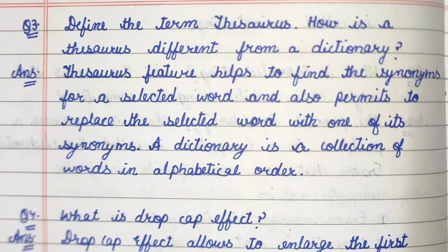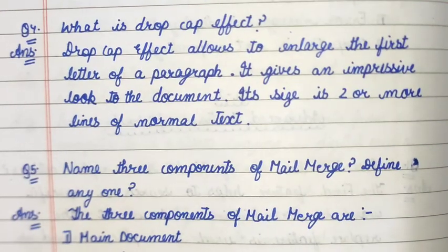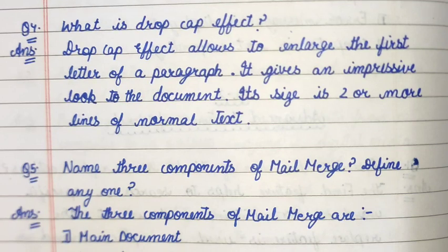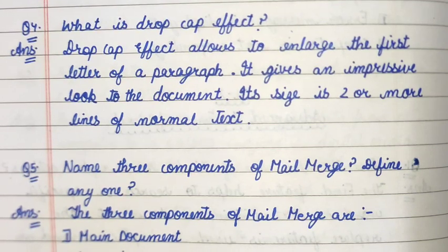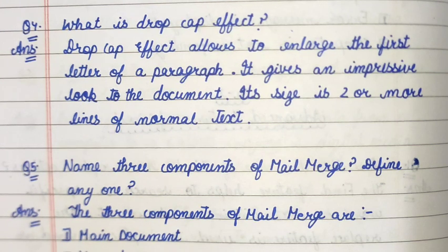A dictionary is a collection of words in alphabetical order. Question number four: what is drop cap effect? Answer: drop cap effect allows to enlarge the first letter of a paragraph. It gives an impressive look to the document. Its size is two or more lines of the normal text.